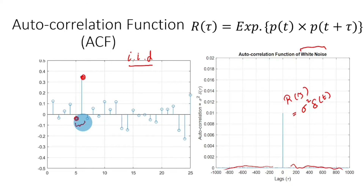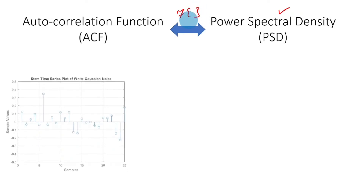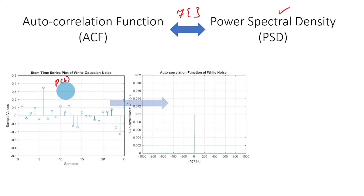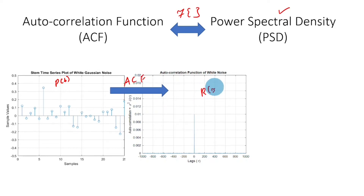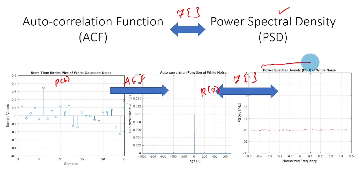Using this autocorrelation function, we can reach the power spectral density by simply taking the Fourier transform. That is: we have a random process P(t), we take the autocorrelation function to get R(tau), and finally we take the Fourier transform of R(tau) to obtain the power spectral density, which is often denoted S_P(f).